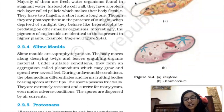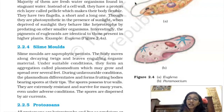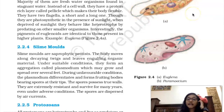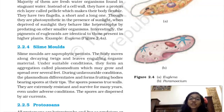The third classification is Euglenoids. These are freshwater organisms found in rivers and stagnant water. They don't have a cell wall; instead they have a protein-rich layer called a pellicle, which provides flexibility. They also have two flagella — one long and one short. Euglenoids are photosynthetic when sunlight is available, but behave as heterotrophs in the absence of sunlight. They have the same pigments as seen in higher plants.